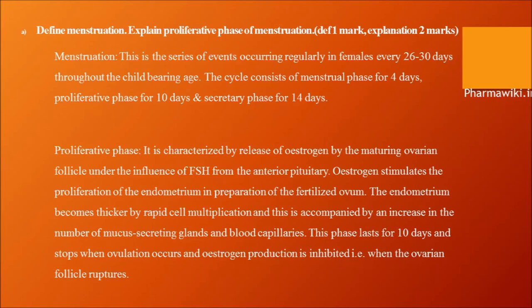Estrogen stimulates the proliferation of the endometrium in preparation for the fertilized ovum. The endometrium becomes thicker by rapid cell multiplication, accompanied by an increase in the number of mucus-secreting glands and blood capillaries. This phase lasts for 10 days and stops when ovulation occurs and estrogen production is inhibited when the ovarian follicle ruptures.